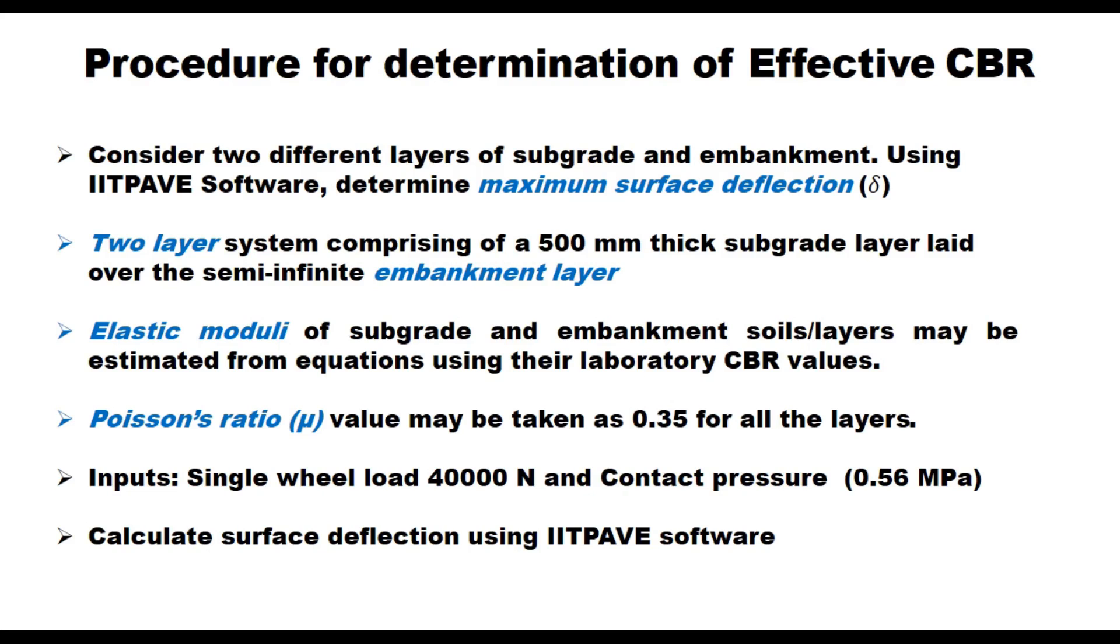The procedure of determining effective CBR is like this: first consider two different layers of subgrade and embankment and using IIT PAVE software determine maximum surface deflection delta. In this two layer system, the top layer comprises of 500 mm thick subgrade laid over the semi-infinite layer of embankment. Elastic modulus of subgrade and embankment layer is determined using equations which I just told you, and Poisson's ratio for the soil is to be taken 0.35 for both layers. Input to the program is the wheel load of 40,000 newton and contact pressure of 0.56 MPa, then calculate the surface deflection using IIT PAVE software.